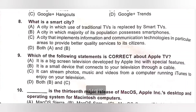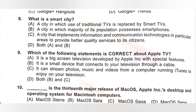Question 8: What is a smart city? A. A city in which use of traditional TVs is replaced by smart TVs — incorrect. B. A city in which the majority of its population possesses smartphones — incorrect. C. A city that implements information and communication technologies in particular areas to provide better quality services to its citizens. Option C is the correct answer.